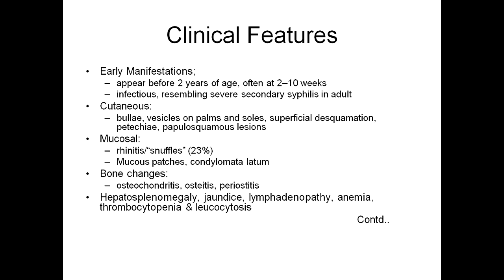Early manifestations of congenital syphilis appear before two years of age, often at two to ten weeks, resembling severe secondary syphilis in adults. Cutaneous lesions include bullous vesicles on palms and soles, superficial desquamation, and papulosquamous lesions. Mucosal findings: rhinitis and mucous patches. Condyloma lata may also be present. Bone changes: osteochondritis, osteitis, and periostitis. Other systems may be involved: hepatosplenomegaly, lymphadenopathy, and thrombocytopenia.